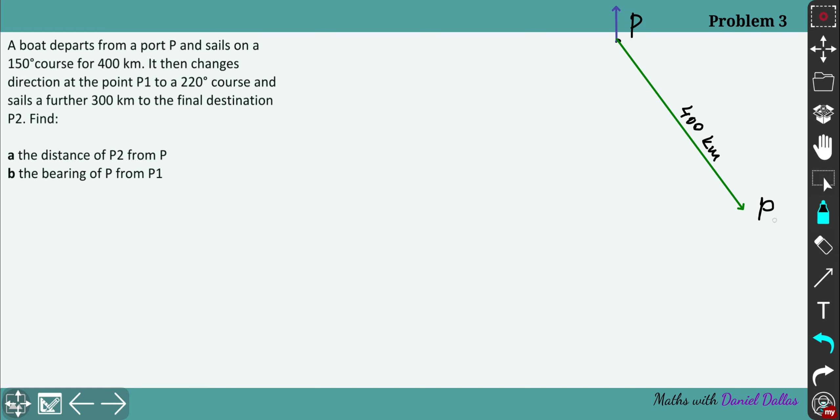To the point P1 which is the turning point here, and then the bearings we can mark immediately so the bearing is 150 degrees. Next it turns to another bearing 220 and sails further 300 kilometers, so pretty the same that we explored before.